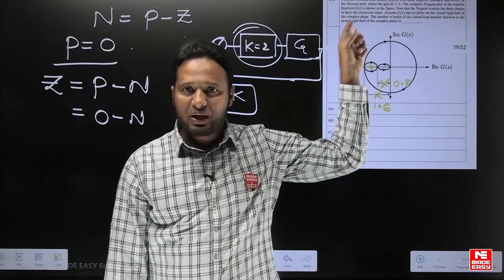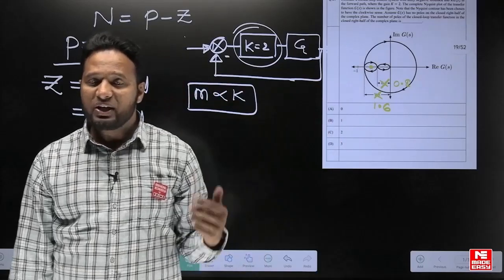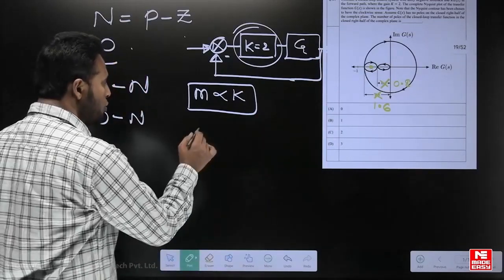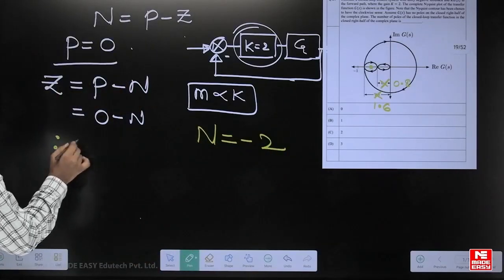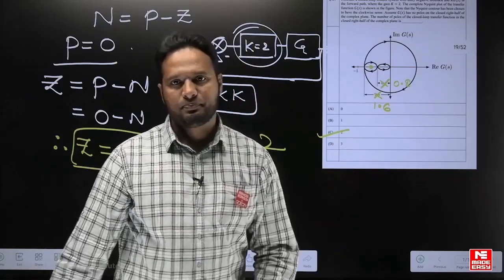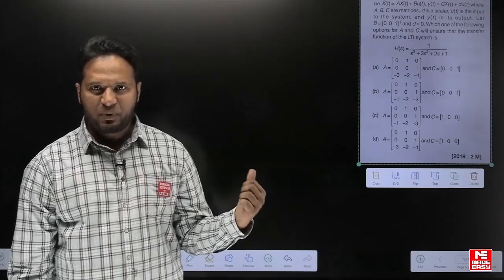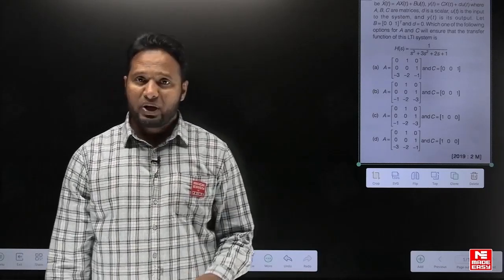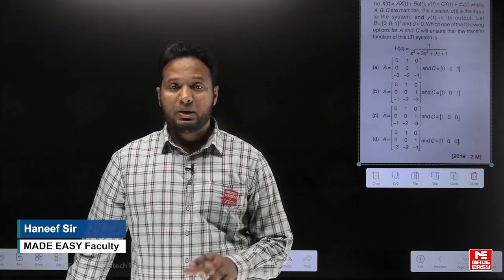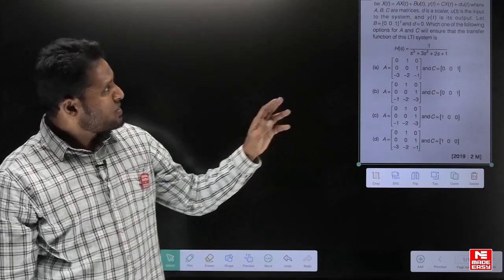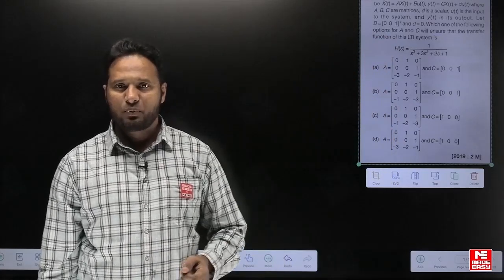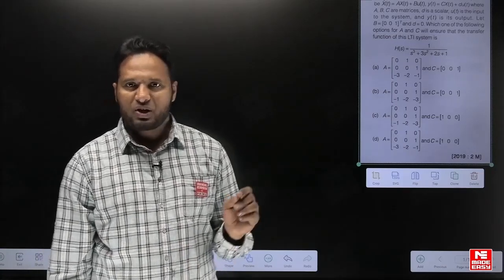Minus 1 is encircled twice by the Nyquist plot in the clockwise direction, giving N = −2. Therefore, the number of closed-loop poles in the right side of the s-plane, Z = 2. The answer to the question is option C. Now let us talk about another PYQ from state space analysis — an important and frequently examined topic in GATE for both 1 and 2 mark questions. The transfer function of the system and the B and D matrices are given; we need to find the A and C matrices.